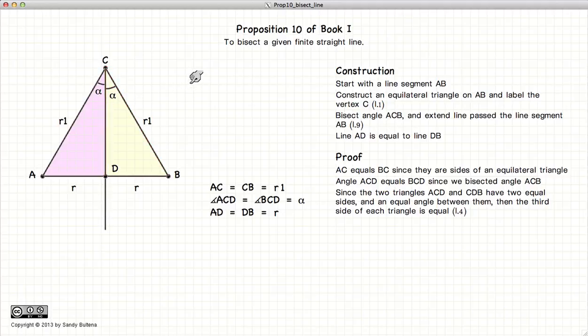So we have two triangles side-angle-side equivalent, which we know by Proposition 4 means that the entire triangle is equal, which means the base of the triangles are equal.